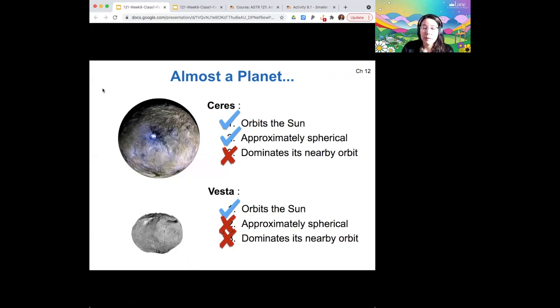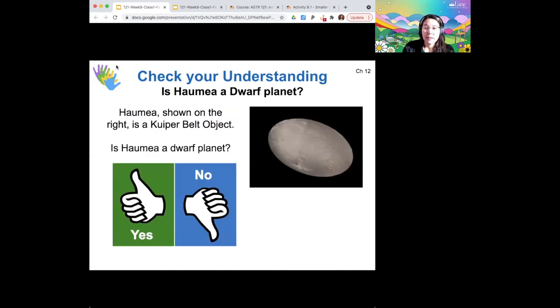So there's some dwarf planets that are not quite so clear cut. So what do you think? Here's Haumea. Do you think Haumea, which is a Kuiper Belt object, could be classified as a dwarf planet?